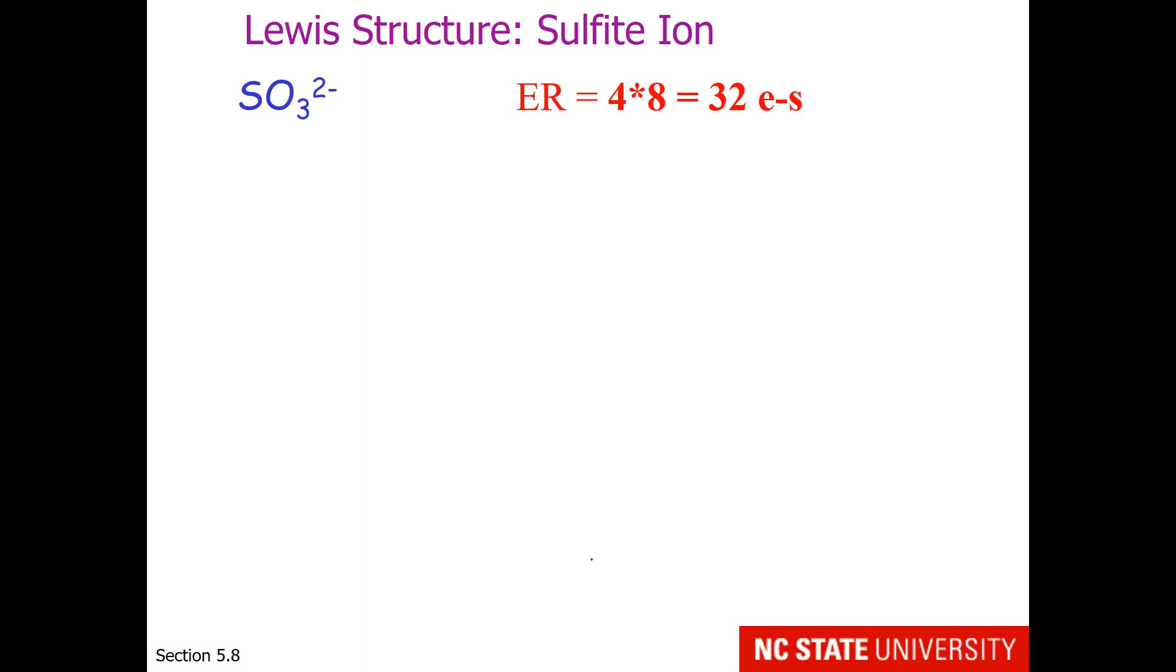Here's an example using the sulfite ion. There are 4 atoms in the structure, so electrons required is 4 times 8, or 32 electrons. The valence electrons will be 6 for sulfur, 6 for each oxygen, and don't forget this has a minus 2 charge, so minus of minus 2 gives us 2 additional valence electrons for a total of 26 valence electrons.